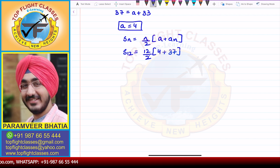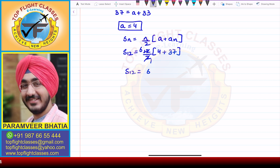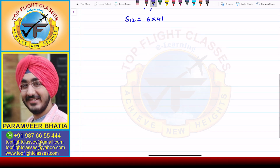Solving this, 12 divided by 2 gives 6, and 4 plus 37 is 41. So S12 is equal to 6 multiplied by 41, which gives S12 is equal to 246.